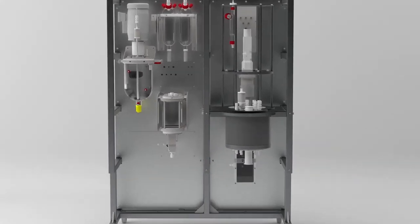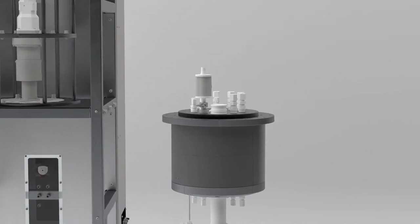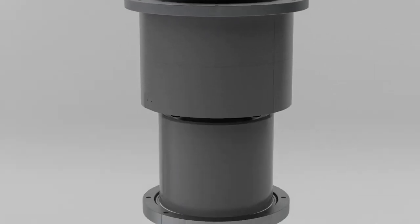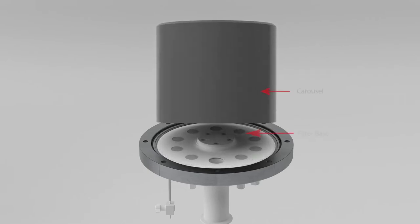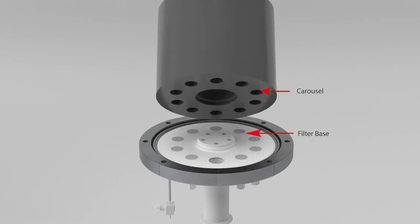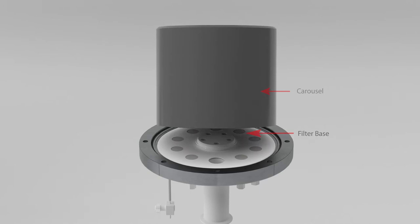The carousel is a series of hollow cylinders moved around a central axis to fixed processing stations. The carousel rotates across a filter base composed of a smooth surface with static filter plates recessed at a depth of 0.1mm.